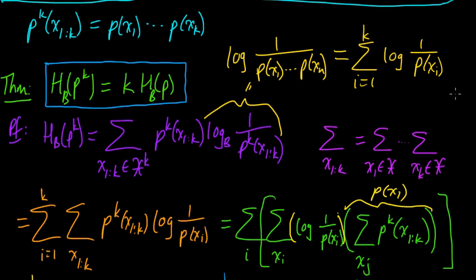Now, maybe just to mention more generally, so here we have them iid. More generally, it turns out that the entropy of the joint distribution of independent variables, not necessarily identically distributed, is the sum of the entropies of the individual marginal distributions. So that's a slight generalization of this. The proof is basically exactly the same.